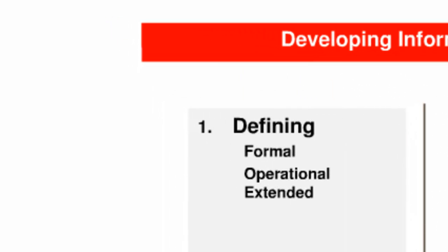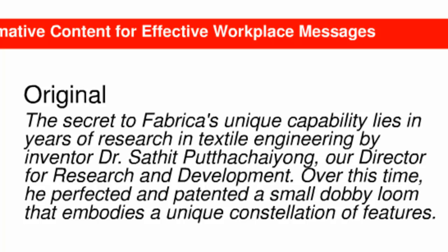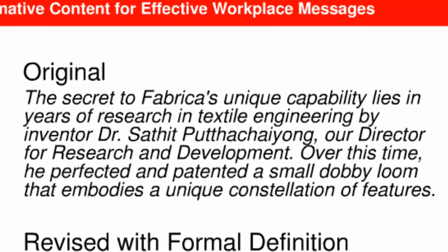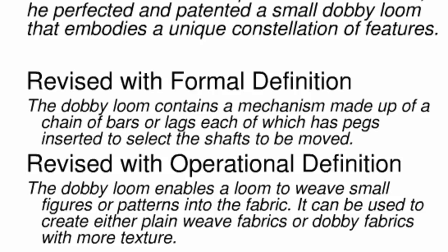I'll begin with defining as the first of the six techniques for developing informative content. I want you to identify terms that might be unfamiliar to the audience. The obvious candidate is Dobby Loom — a technical term that an audience of investors is not likely to understand without a definition. There are three types of definitions to choose from. A formal definition doesn't seem all that helpful because it uses even more technical terminology. An operational definition seems more useful with the business plan's audience because it's less technical and focuses on the function of a Dobby Loom.